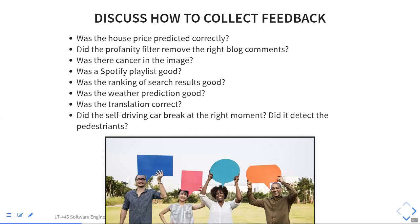The three cases we talked about were actually fairly easy, because you could always think about recall and precision. Let's talk about the Spotify playlist — whether it's any good. This is a much harder case. You can't easily express recall, precision, top-K ranking, or anything like this. It's much harder to collect data that maps directly to any of the metrics used in offline evaluation.